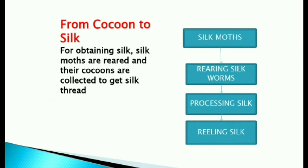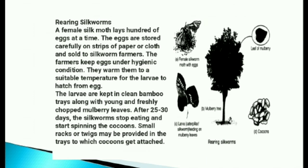From cocoon to silk: For obtaining silk, silk moths are reared and their cocoons are collected to get silk thread. The process goes from silk moth to rearing silkworms, then processing silk and reeling silk.